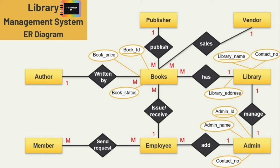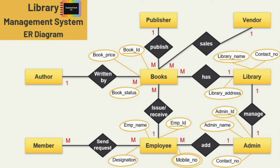Next, let's see the attributes for employee. First is employee ID — this is the key attribute. Next is employee name, and then the designation of the employee and the employee's contact number. We have used a multi-valued attribute for contact number because one user can have various contact numbers.